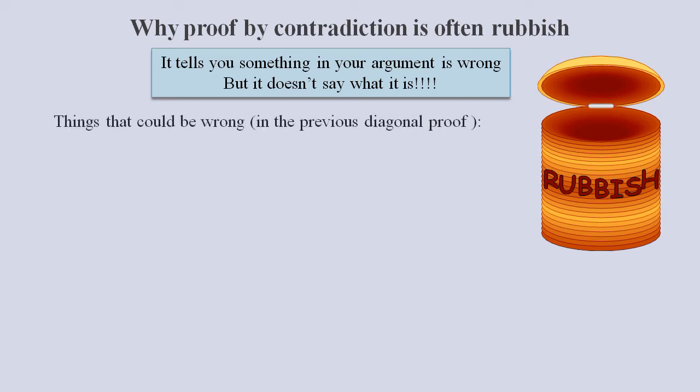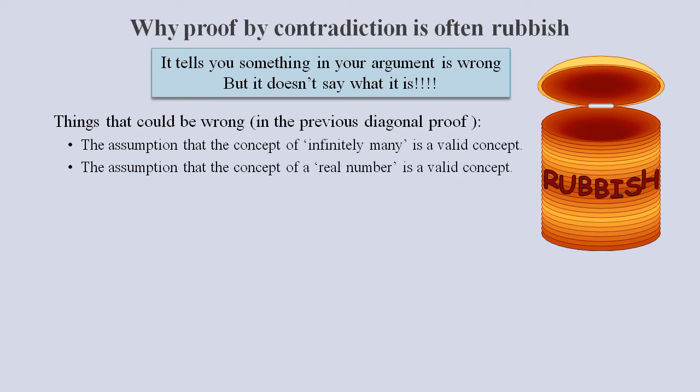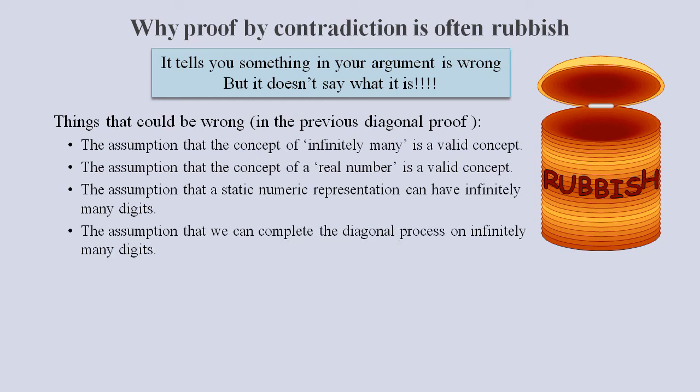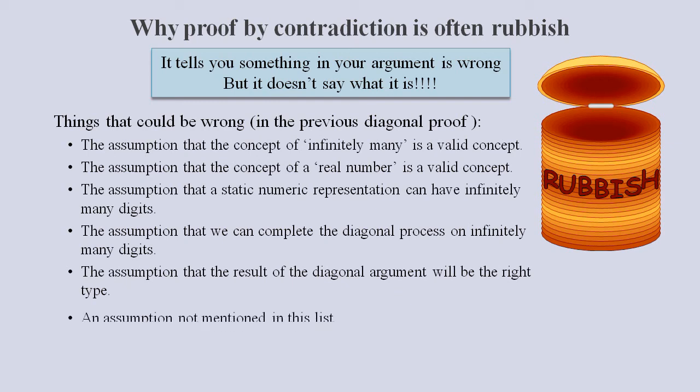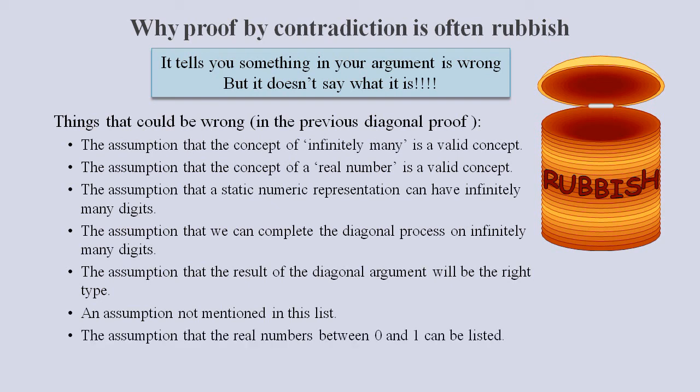In the diagonal proof by contradiction, we assumed that the concept of infinitely many is a valid concept. The concept of a real number is a valid concept. A static numeric representation can have infinitely many digits. We can complete the diagonal process on infinitely many digits. The result of the diagonal argument will be the right type. And the list goes on because we assumed many things. Finally, we have the assumption that real numbers between 0 and 1 can be listed. But this last one is what the mathematicians want to claim is what caused the contradiction. So they just claim that all other assumptions are given or assumed to be true.